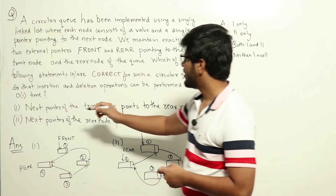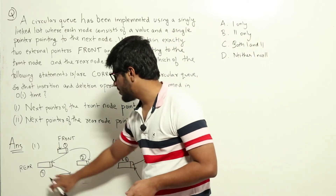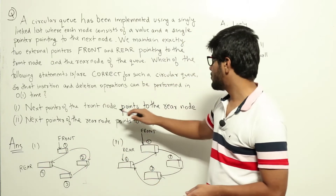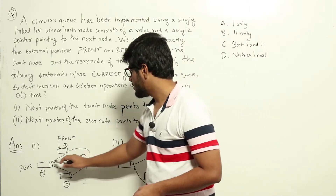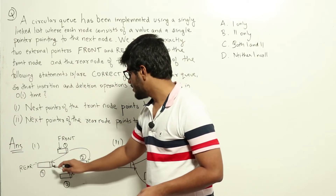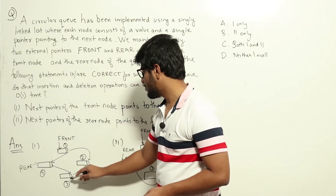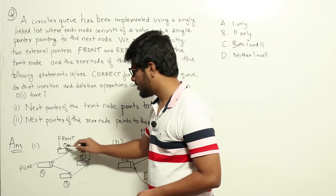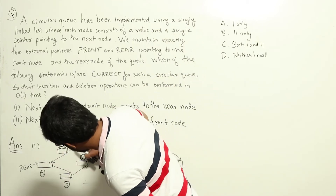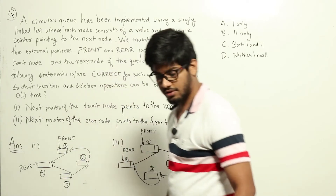Let's look at the first one — next pointer of the front node points to the rear node. Here is the circular queue implemented with four nodes. This is the front node and its next pointer points to the rear node, which is node 4. The next pointer of the rear node points back around, and so on through the chain.